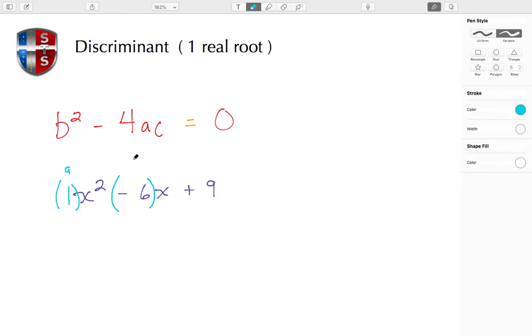We have the b value of -6. I'll use parentheses to make sure I capture the negative sign. And then the last value c, this constant, is 9.